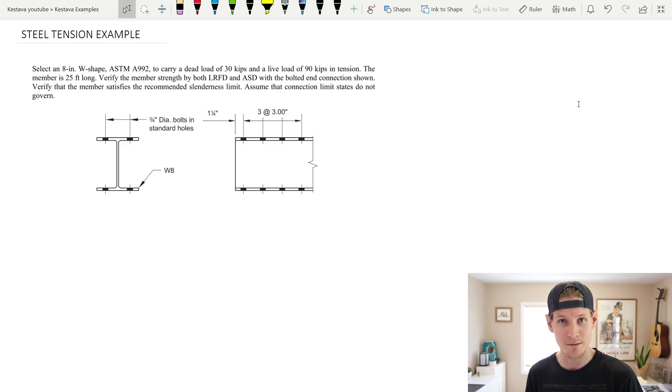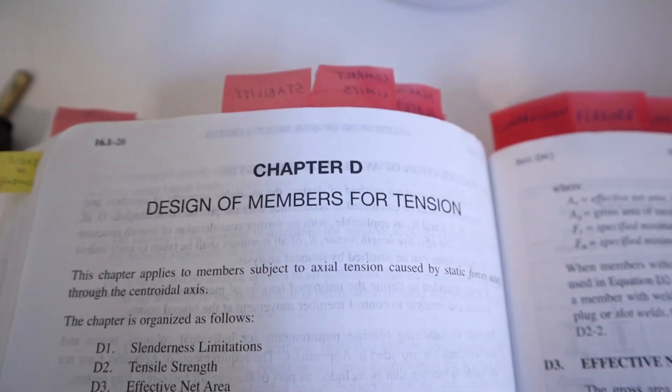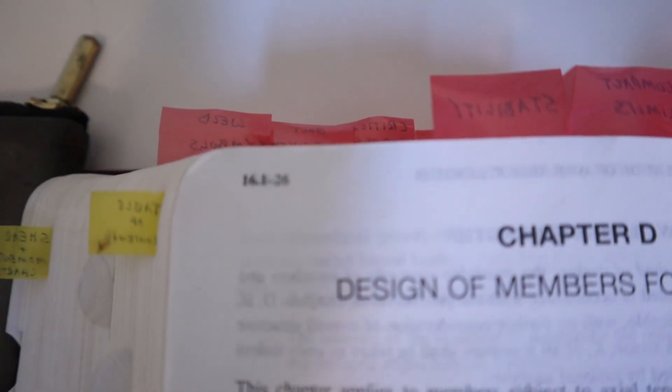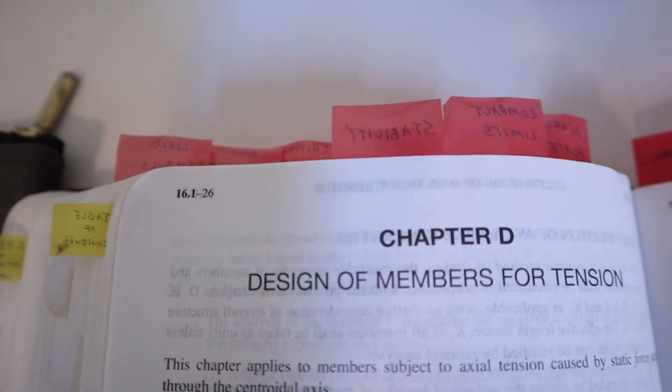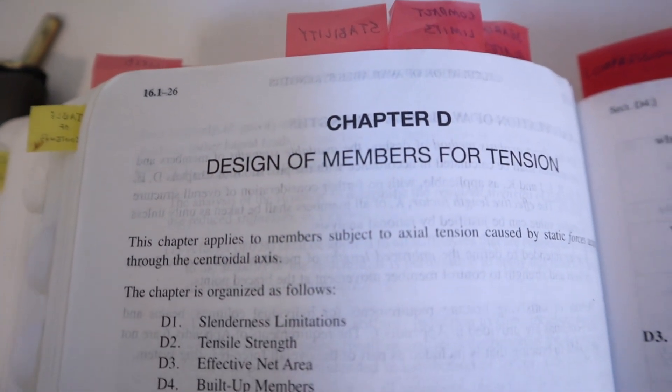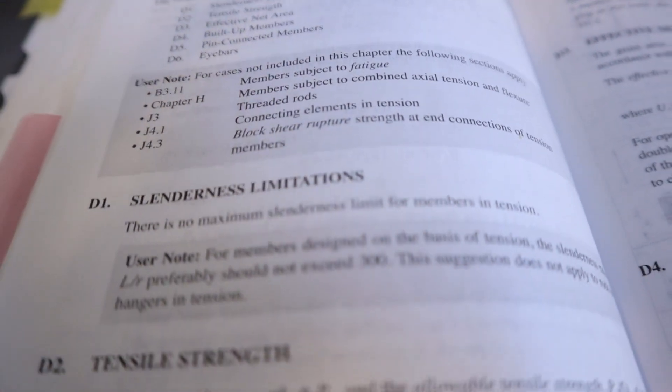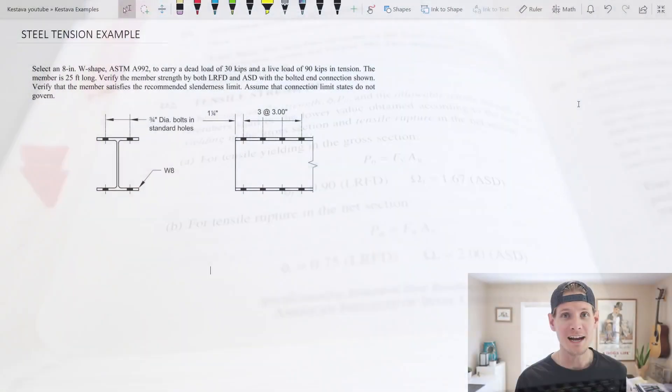So this is a steel tension example. That means we're going to grab our tab because we all got our tabs and we're going to be heading over to chapter D. That's in the back and that is all about the design of members for tension. I mean that's the title right there. That's where we're going to want to be. There's only like four pages within this chapter. So design of steel in tension, there's not a lot to it. It's pretty straightforward but there's a couple of gimmicks that are a little strange and that's where this example is really going to make things clear and make you a lot more sound with the design of steel members in tension.